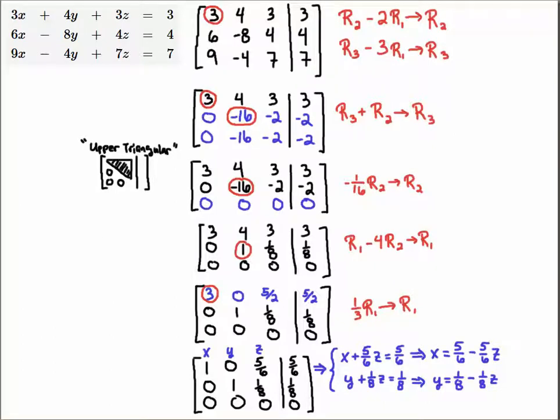Alright, so let's introduce a new parameter t. Let's let Z equal t. Sometimes people will let Z equal s or other letters - you can choose all kinds of letters, I'm just going to choose t. And then I will convert my solution here: X equals 5/6 minus 5/6*Z, that then of course is going to become 5/6 minus 5/6*t.